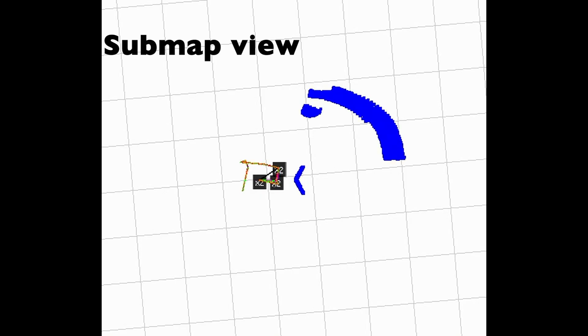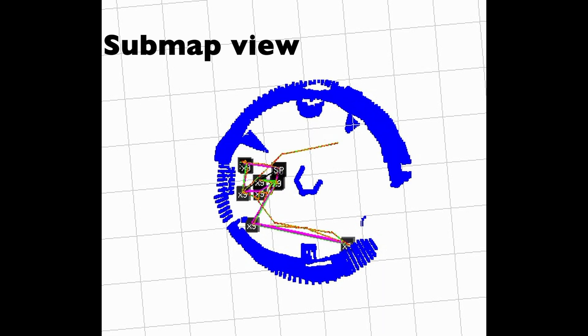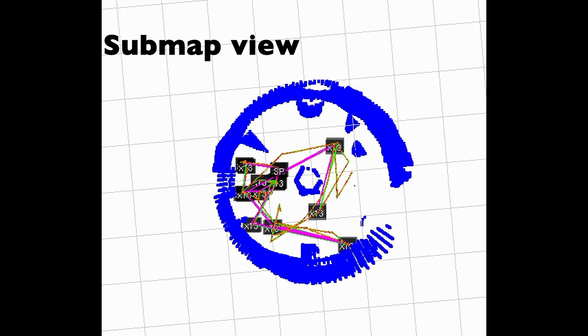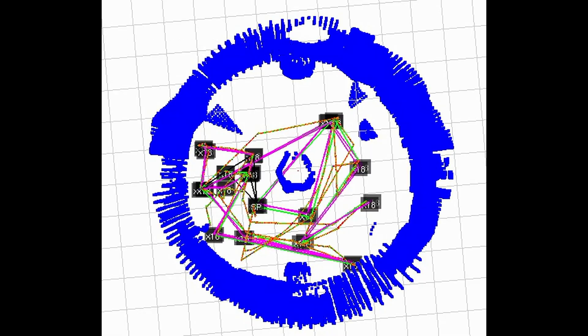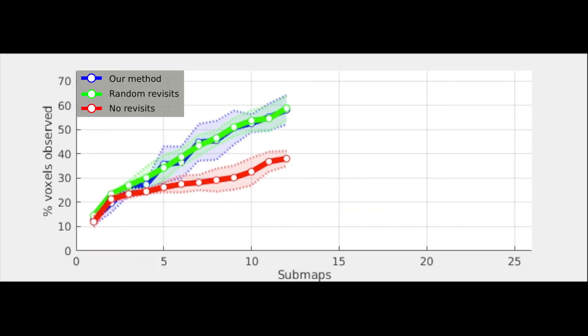Here is the same simulation run visualizing the accumulated global map and adjusting local submaps based on loop closures. With respect to baselines, we see a higher number of loop closures in comparable volumetric exploration.